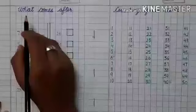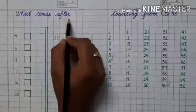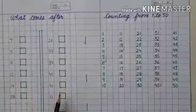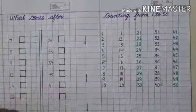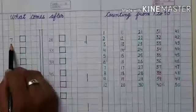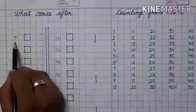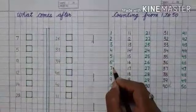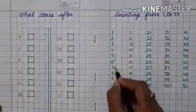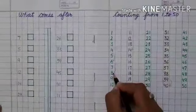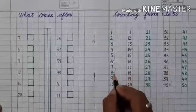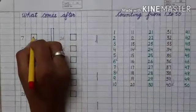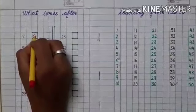Let us do what comes after in the notebook. Open your notebook students and do with ma'am. Which number is this? Seven. Now see in the counting — here is seven written. What comes after seven? Eight — that is eight. You have to write eight in the box.